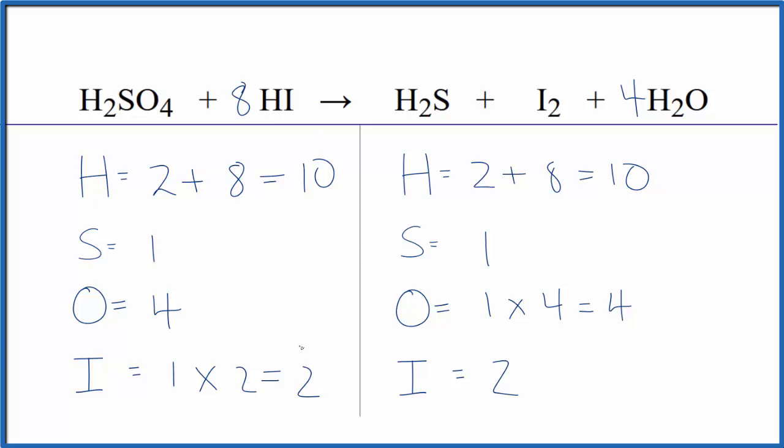That would change the number of iodines though. We now have the eight times the one. So we have eight iodine atoms, but we know that's easy to fix. We just put a four here, two times four, that equals eight, doesn't change anything here.